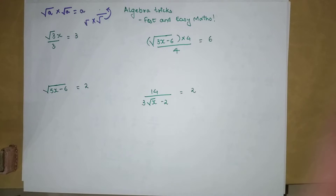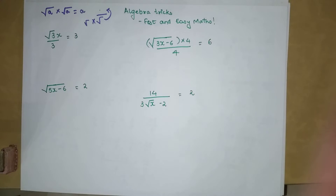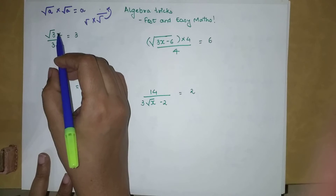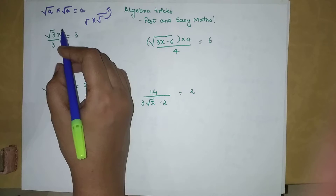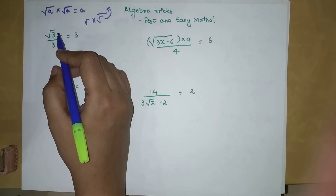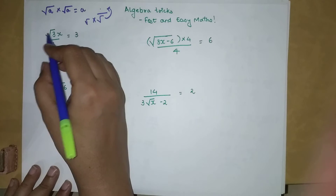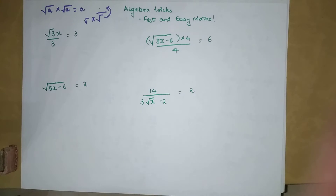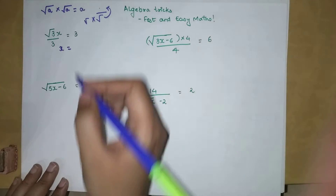Let's begin with our first sum. This looks very easy but people get tricked. We have root 3 times x — note that x is not under the root — so we have (√3 / 3) × x = 3, and we need to find the value of x.